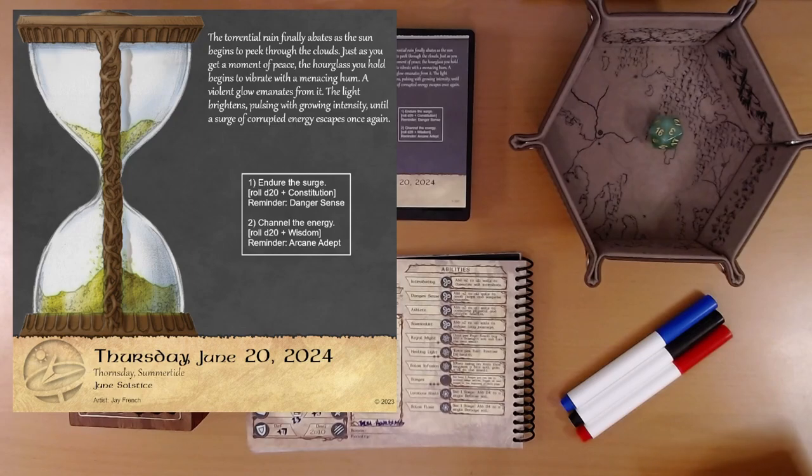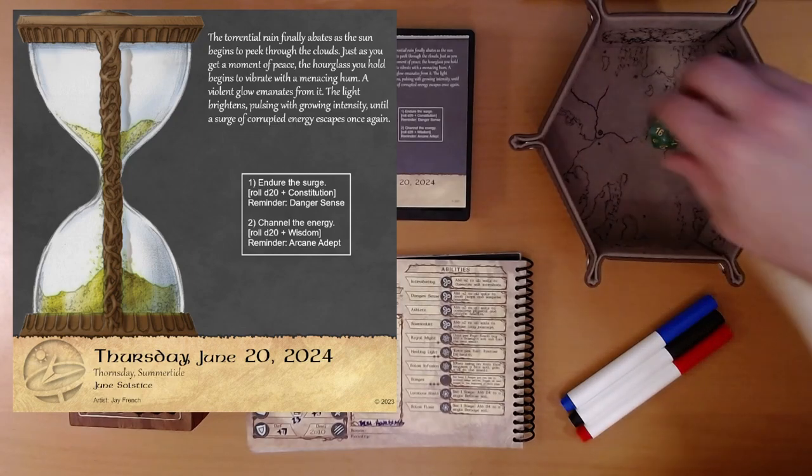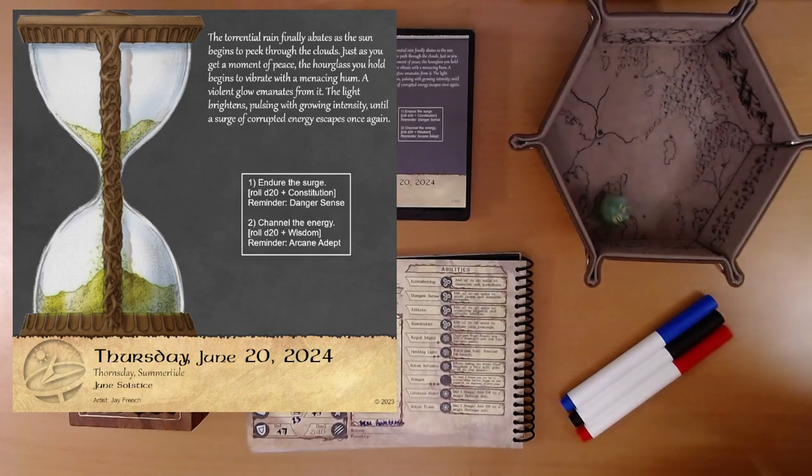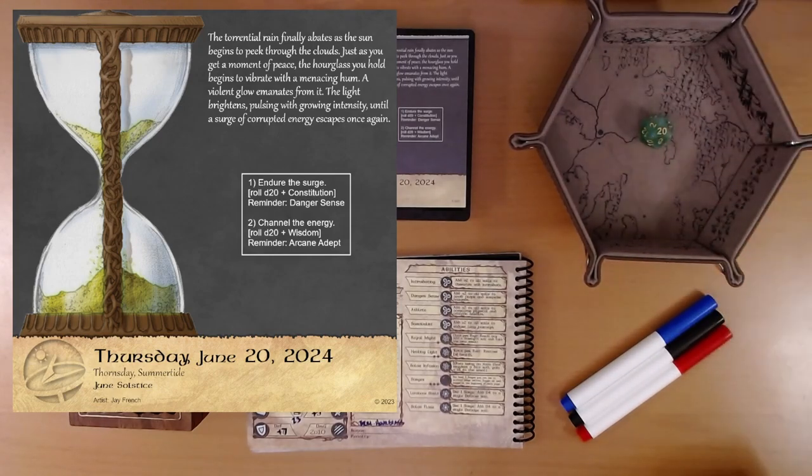Okay. Endure the surge. Roll D20 plus Constitution. Reminder, Danger Sense. So, oh, 20. Excellent. We get a boon die for that, and that's the best result here. You steel yourself against the powerful corrupted energy, demonstrating resilience. We would have lost varying amounts of health if we didn't make that roll. And now, channel the energy.